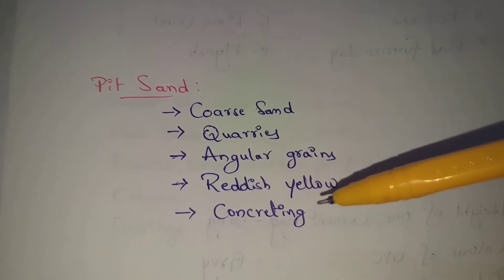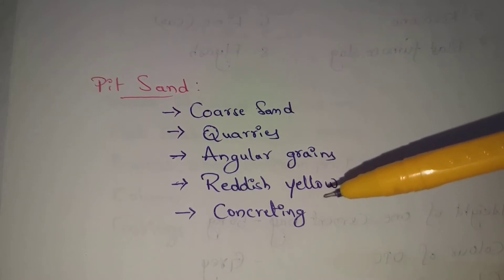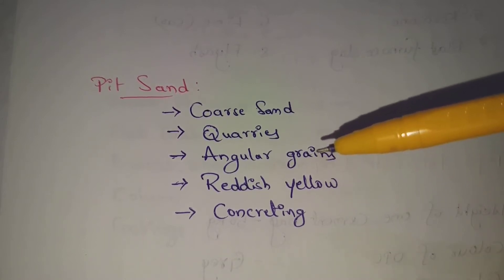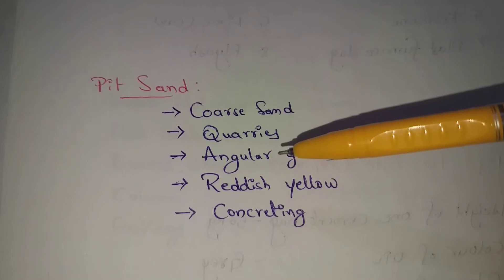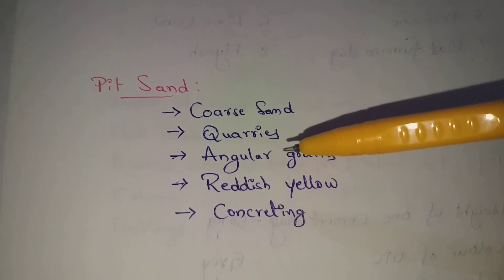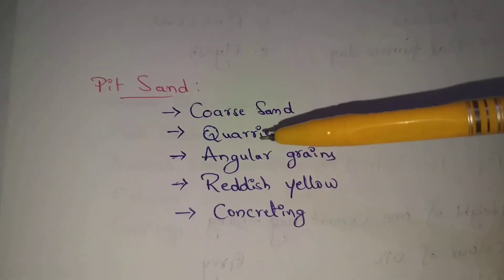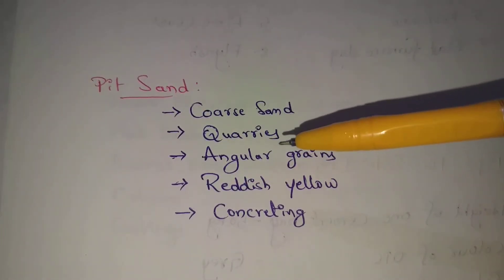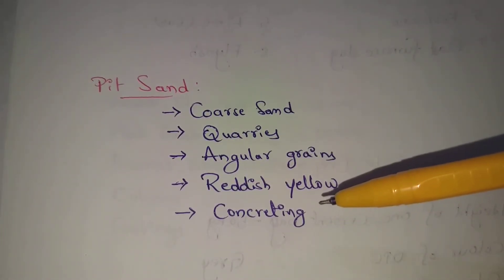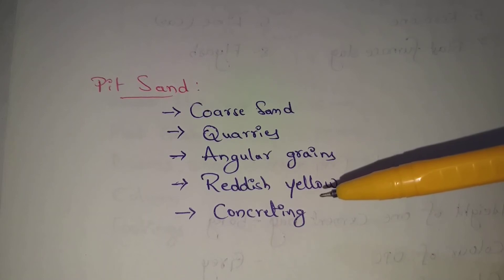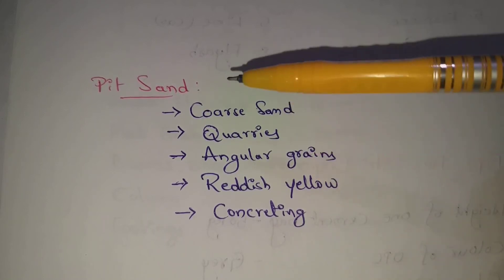This pit sand is used for concrete. It is angular in shape, and that is why it is the best for concrete use.